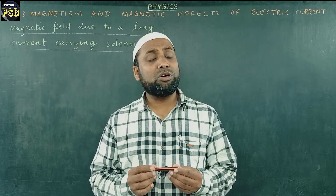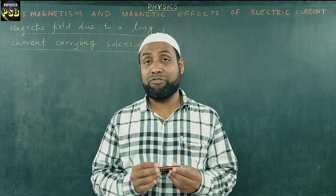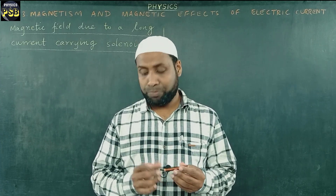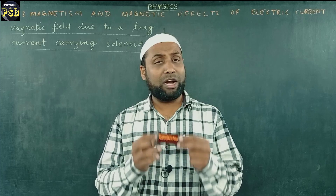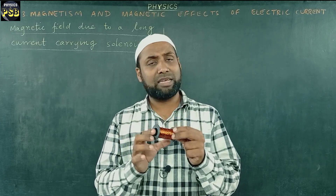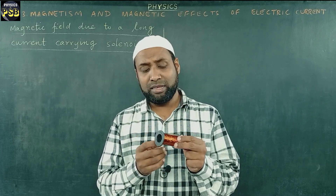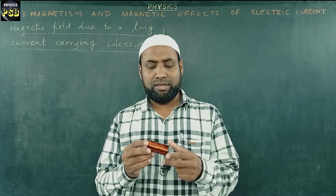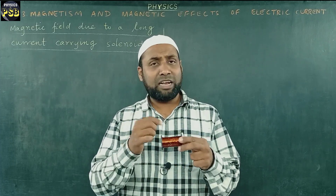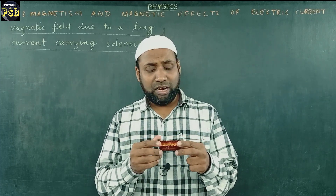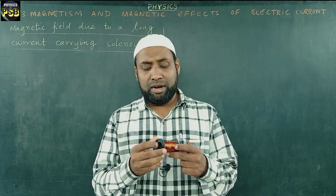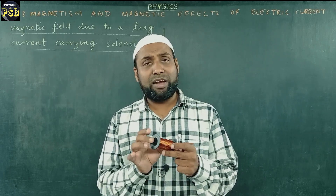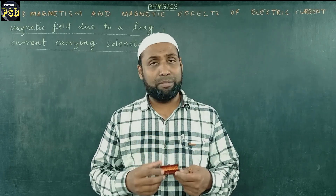Solenoids are used to produce uniform magnetic field. I have one more solenoid with me. This is another solenoid. The windings are done very close to each other and the length is very large compared to the diameter.